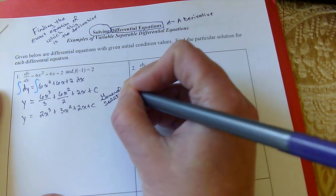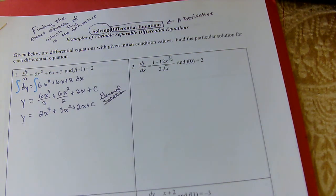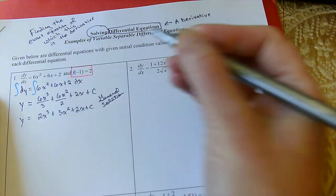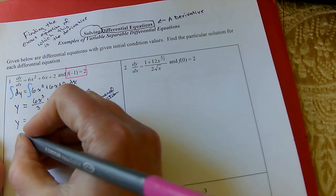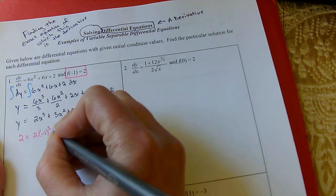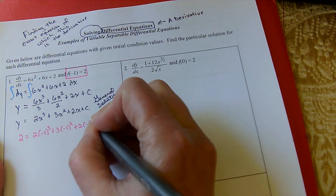This is all of the equations that, if I take the derivative, I get what I started with. But we've been given an initial value, so this helps us find the particular solution. We are given that f of negative 1 is 2. In other words, if I plug in negative 1 for x, my answer should be 2. So I'm going to plug in the information given: 2 equals 2 times negative 1 cubed plus 3 times negative 1 squared plus 2 times negative 1 plus c.